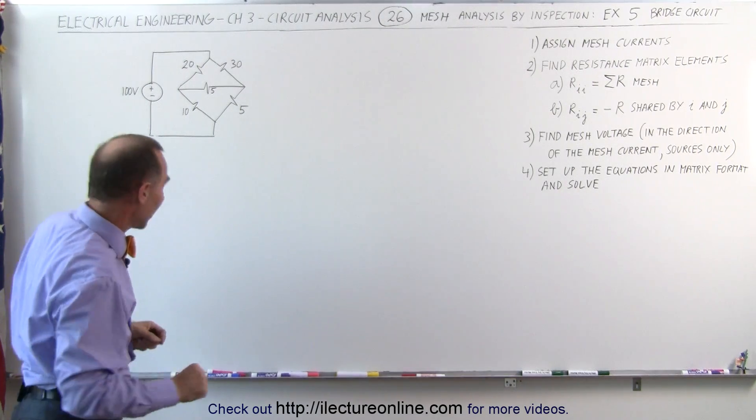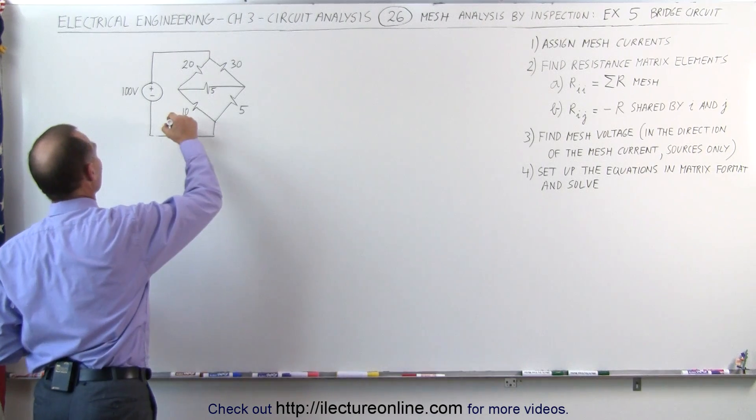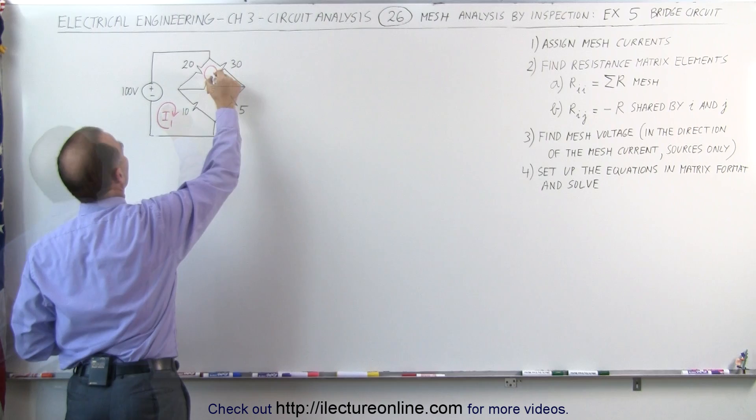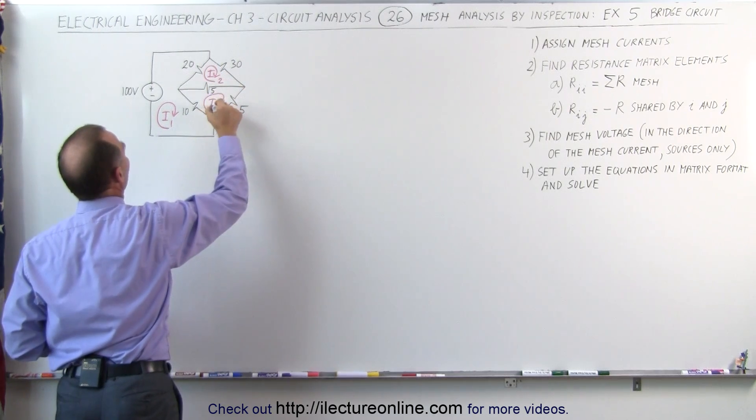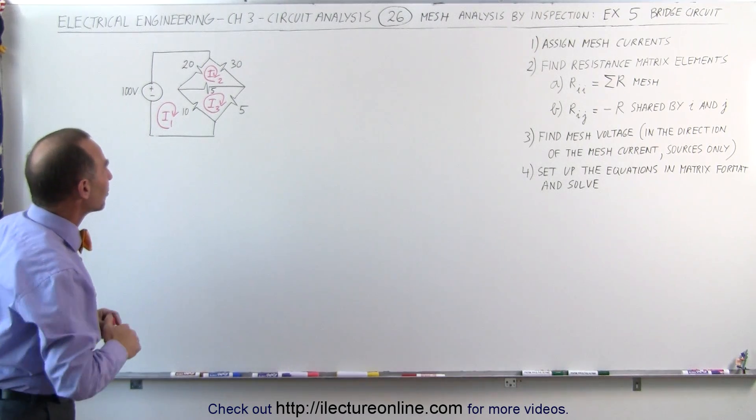So let's go ahead and use our normal methodology. The first thing we do is assign mesh currents to the three meshes. There are three loops here, three meshes. Let's call them I1, I2, and the third one I3.